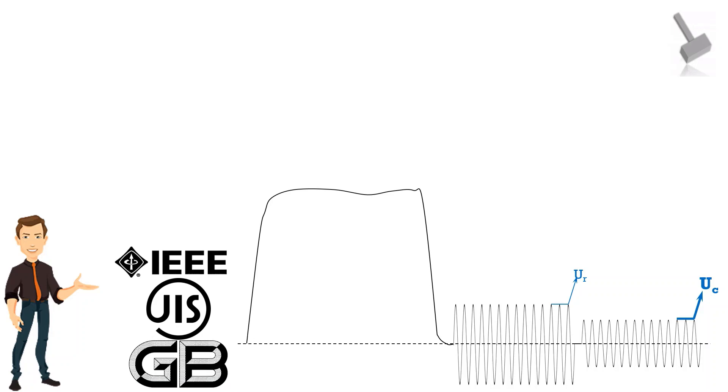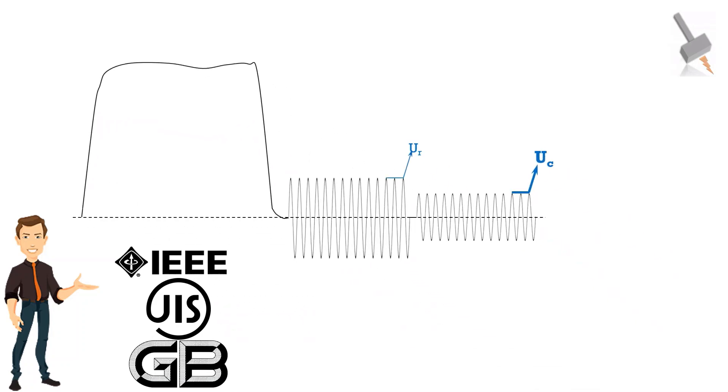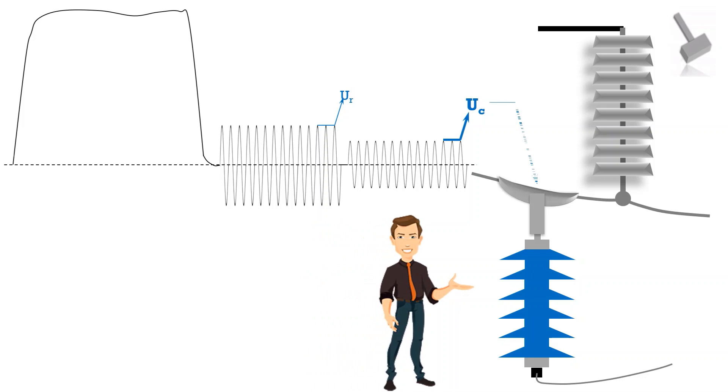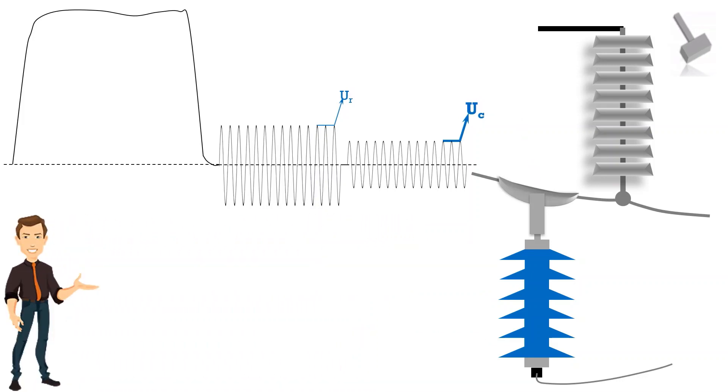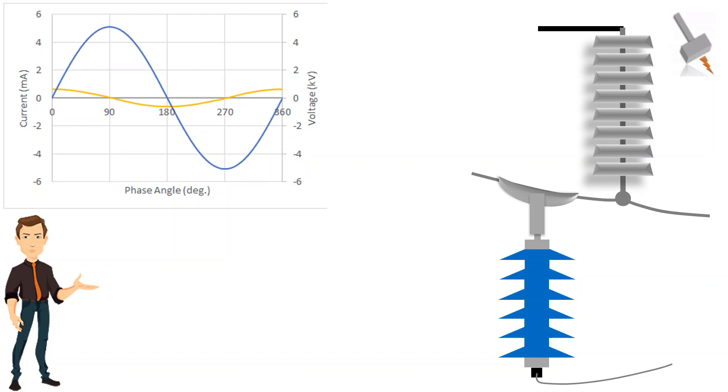In IEC, JIS, and GB standards, it is defined as the maximum RMS value of power frequency voltage that can be applied across arrestor terminals. It is the voltage that can be applied indefinitely without causing any increase in leakage current through the lightning arrestor.